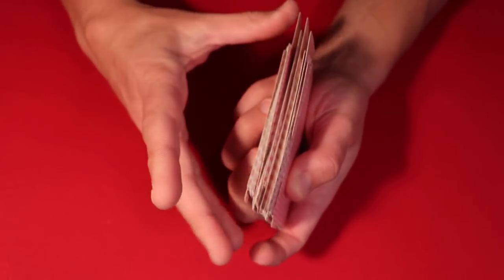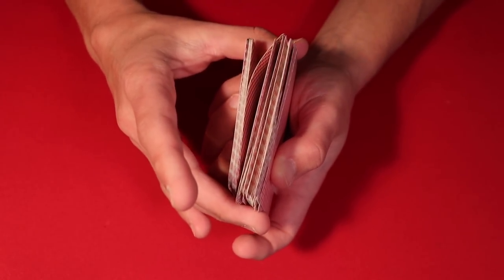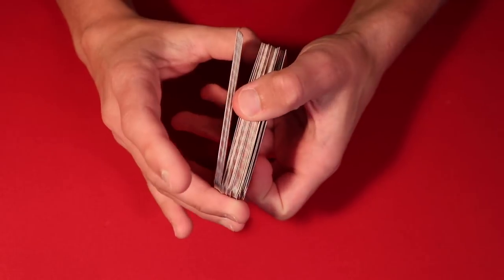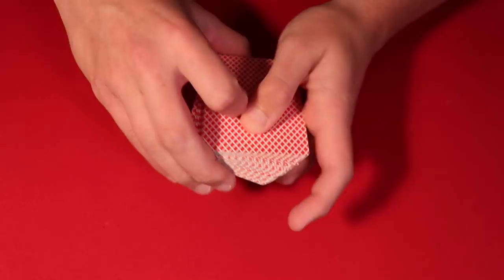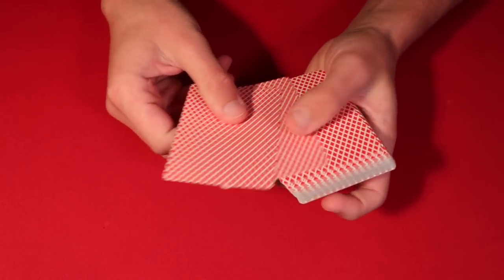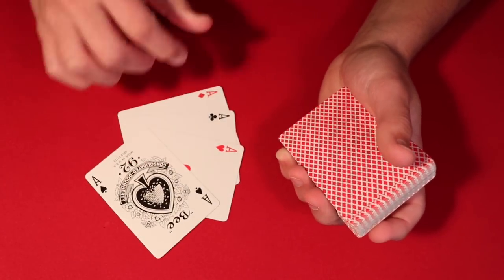So you push down and that's going to cause you to get a break exactly where you need to get the break. So all you have to do here is cut the cards once from the break, put these back on top, and then you are left with the four cards that you need on top.